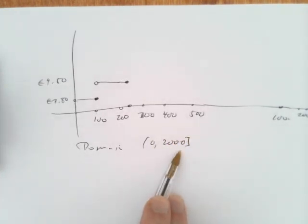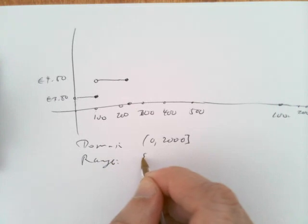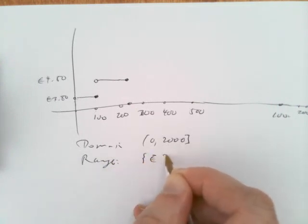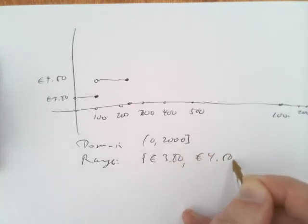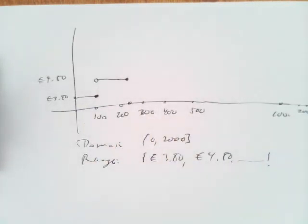The domain was 0 to 2,000 grams, up to and including. And then the range was, well, there were various values that could come out. 380 was one of them. They're all euros: 380, 480, and so on. So you could list the various values that are allowed as the outputs of this function.